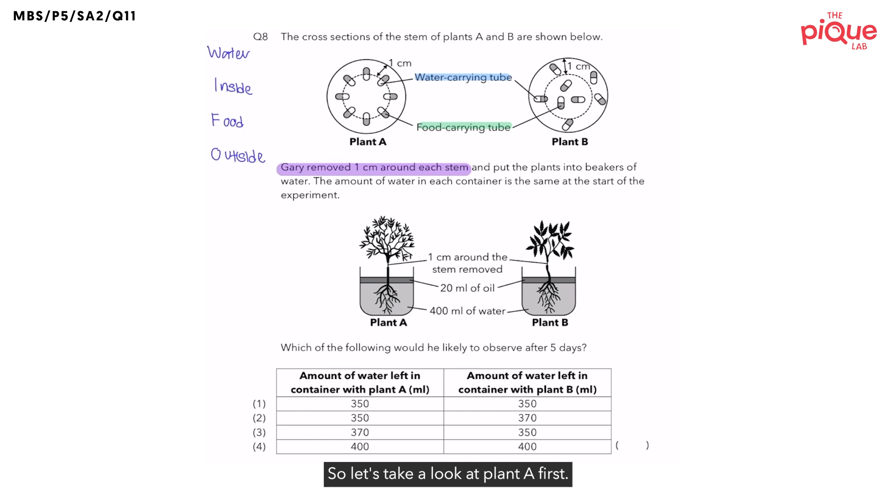So, let's take a look at plant A first. The question tells us that Gary removed a 1cm ring around the stem of plant A. So, let's highlight the area that he removed. It is this area over here. Does anyone know what tubes are being removed when Gary removed the 1cm ring around the stem of plant A? He is removing all of the food-carrying tubes, which means that all of the water-carrying tubes are still intact. So, let's write this down.